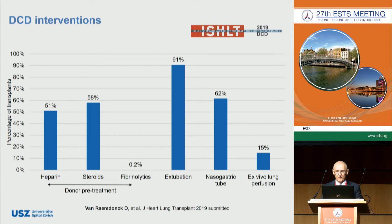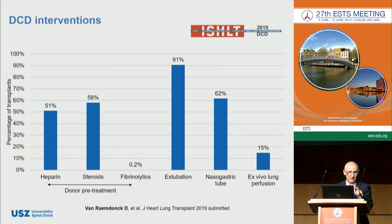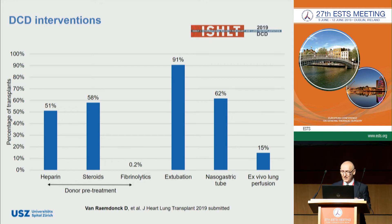I thank Dirk van Raemdonck from Leuven for providing this slide from the latest ISHLT DCD registry report presented in Orlando this April. It shows the DCD interventions performed among 22 participating centers. Heparin is given in 50% of donors, 91% of patients were extubated, two-thirds of cases received a nasogastric tube to prevent gastric aspiration, and the utility of EVLP in this largest series was 15%, up from 12% in the first report published in 2015.